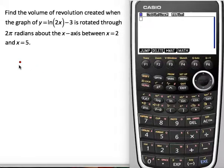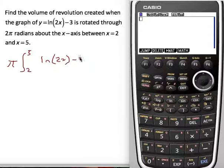So just to show you what I mean, I'm basically doing pi and I want to integrate from 2 to 5, log 2x minus 3, and I want to square all of that. That's actually what I'm trying to work out.